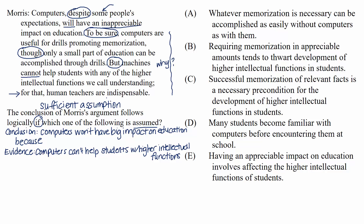To find a gap in an argument, it can be extremely helpful to look for an idea or concept that kind of comes out of nowhere. On the conclusion side, we're talking about how computers can't have a big impact on education. The spotlight of the evidence is how computers can't help students with higher intellectual functioning. So we need to bridge these two concepts — Morris is assuming that if something can't help students with higher intellectual functioning, then that something can't have a big impact on education.